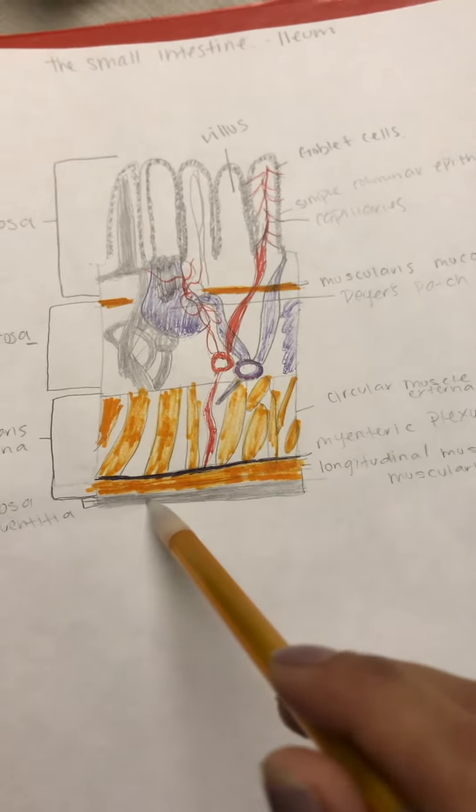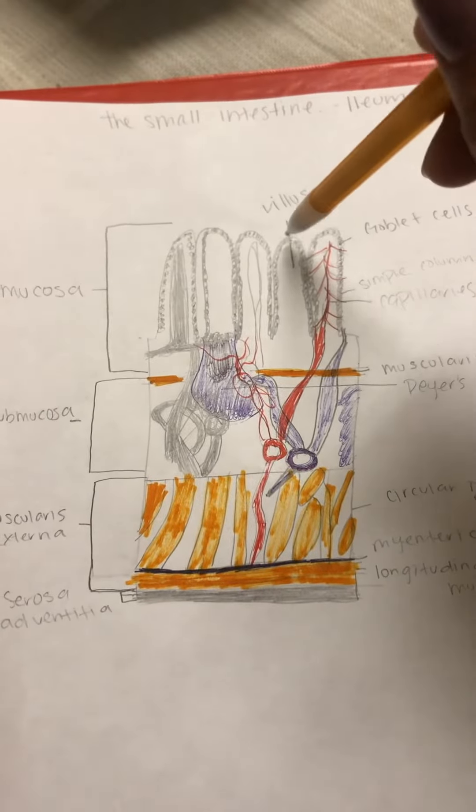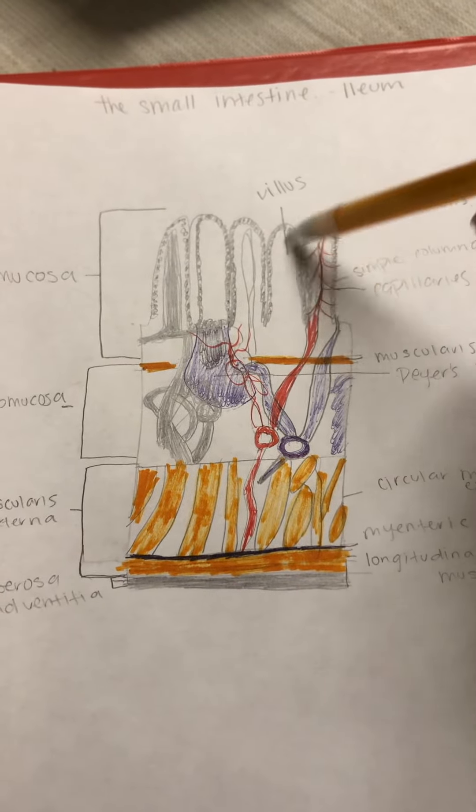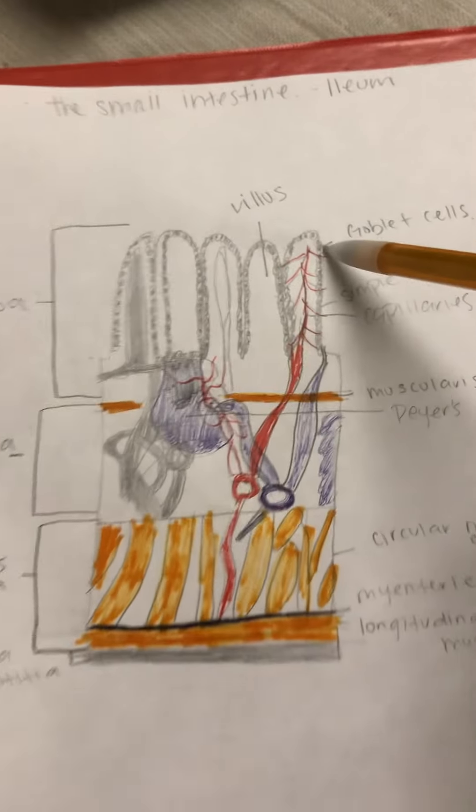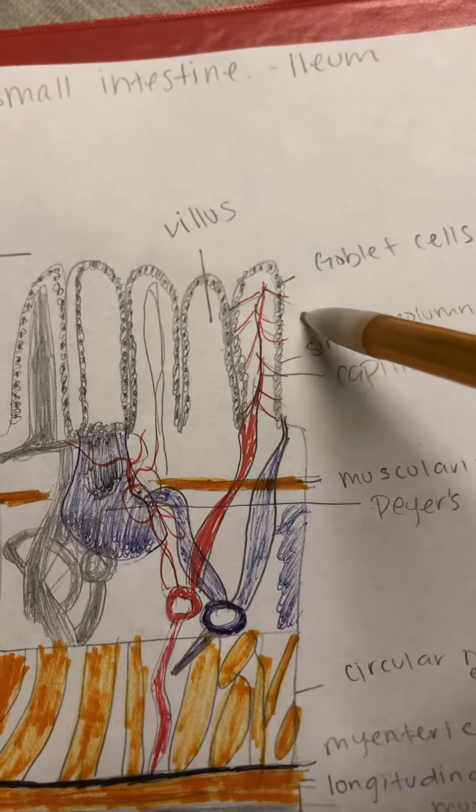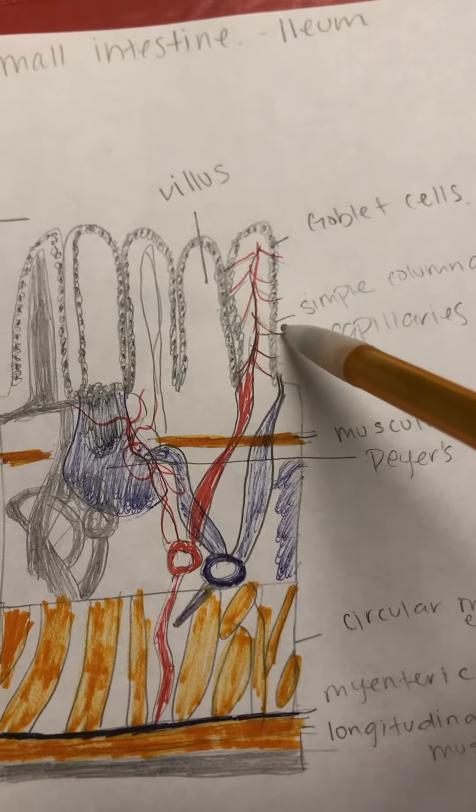This is the villus, these little hair-like projections. The darker dots are the goblet cells. The circles are the simple columnar epithelium.